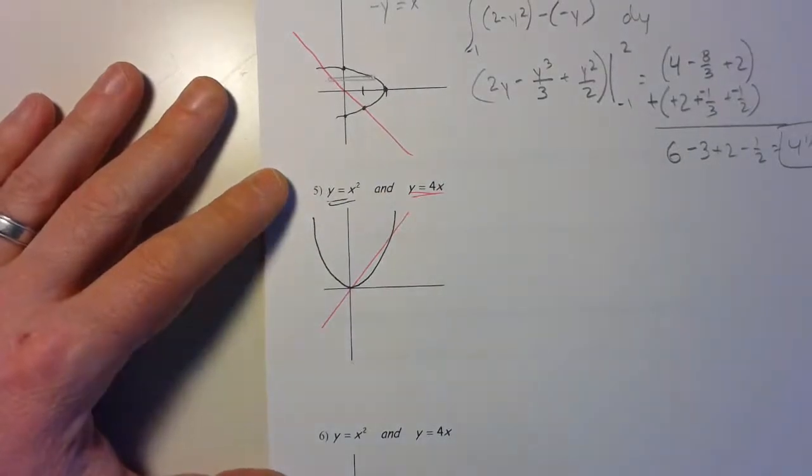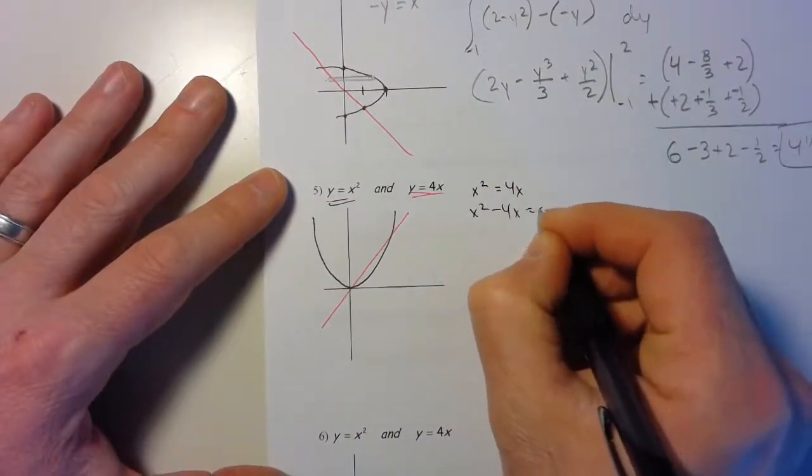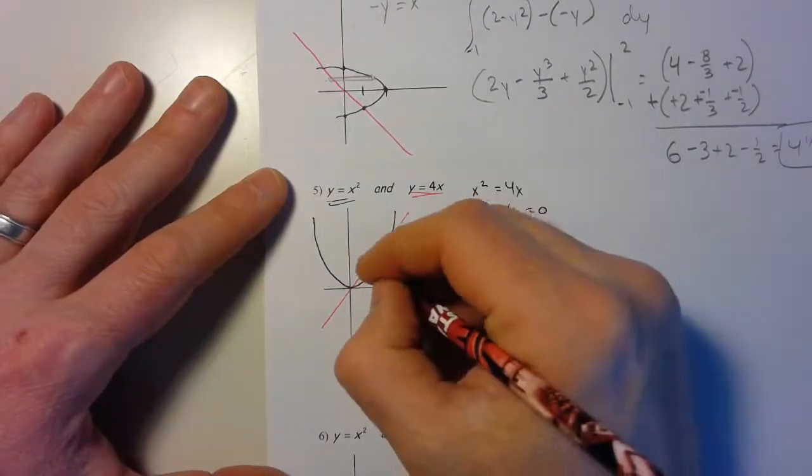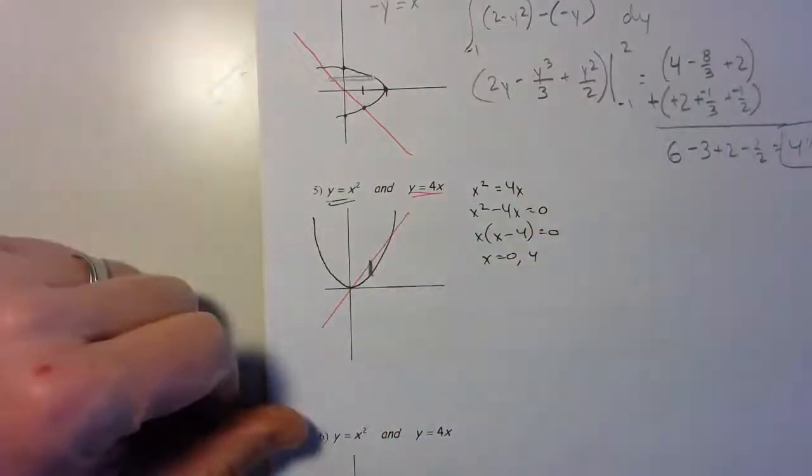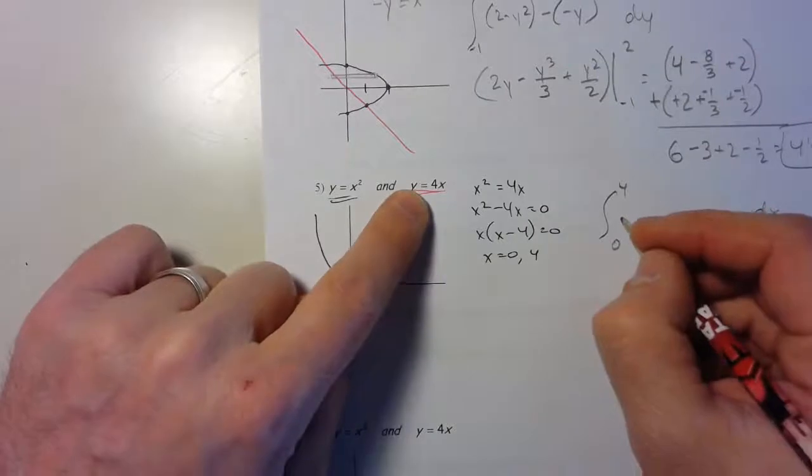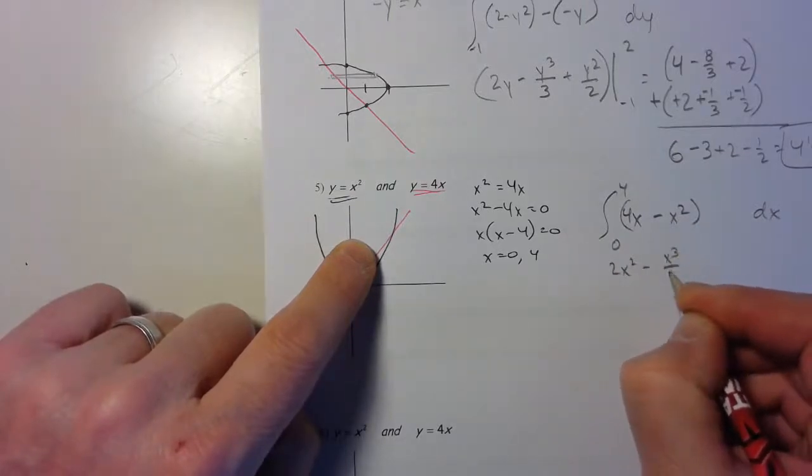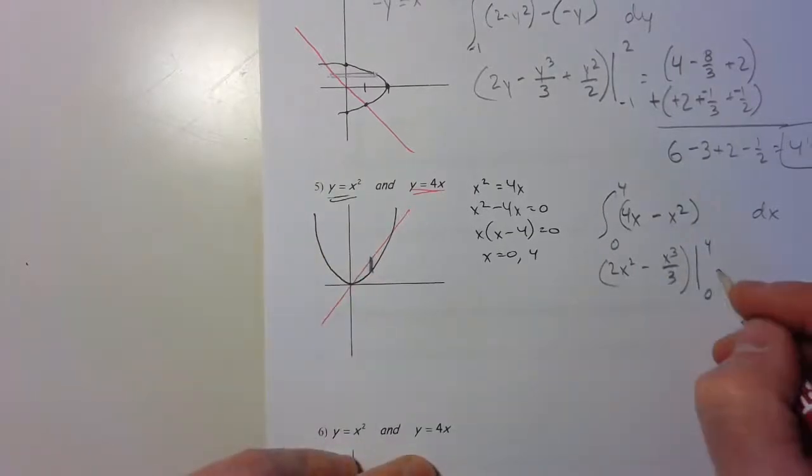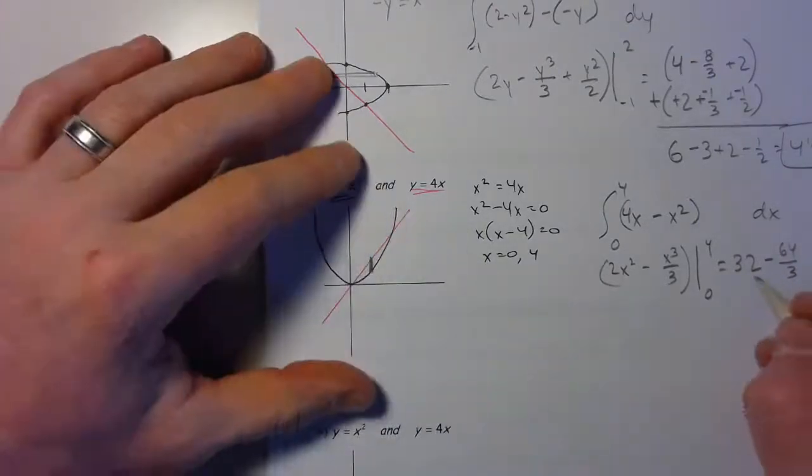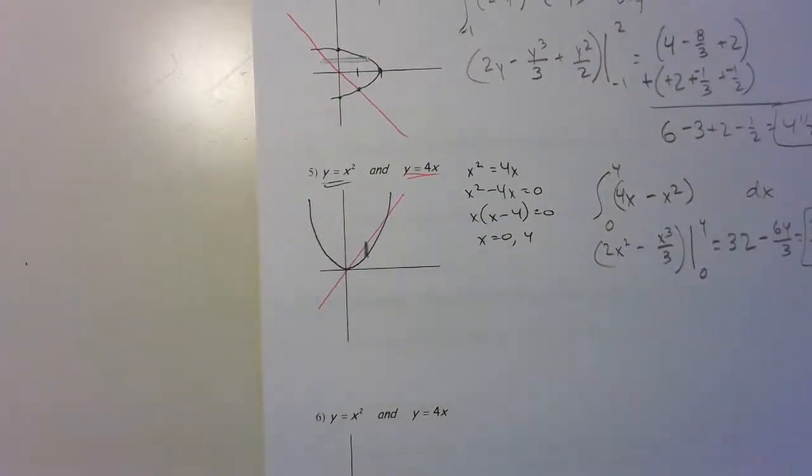Last one. Find my intersections there. Zero and four for the x values. And x definitely seems like the way to go here. We can just do upper bound and lower bound. Yes we could go the other way but I always prefer if I can keep it in dx. So 0 to 4, upper is the pink so it's 4x, lower is the black which is x². That's 2x² - x³/3. Plug it in: lower bound zero so it goes away. This is 96/3, so we're left with 32/3 again.